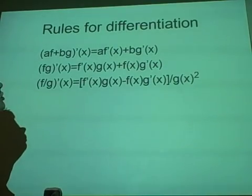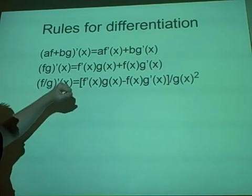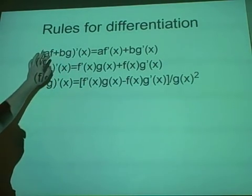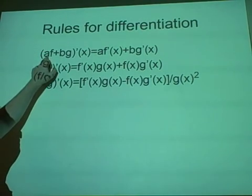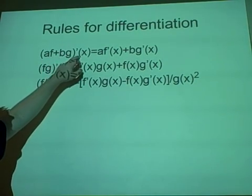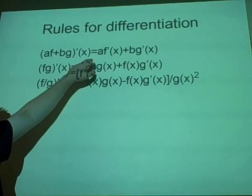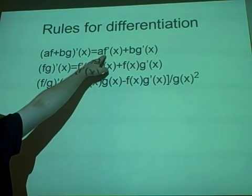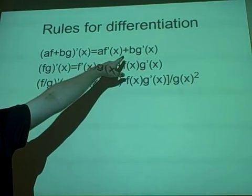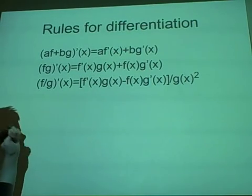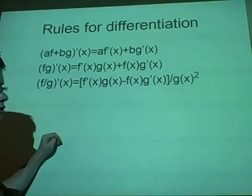Right, some more rules. You'll probably know these as well. Now, a and b are just constants. So we have [af + bg]' with respect to x is a times the differentiation of f plus b times the differentiation of g.